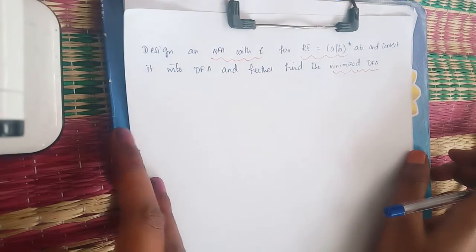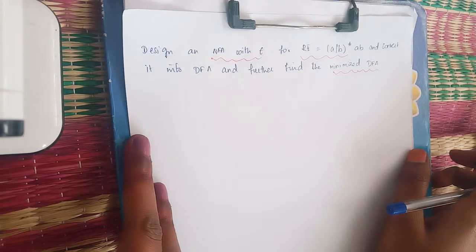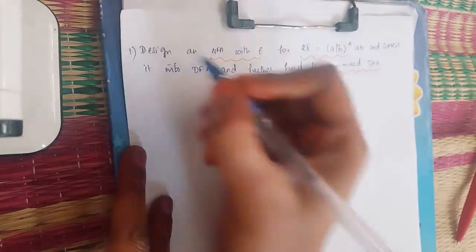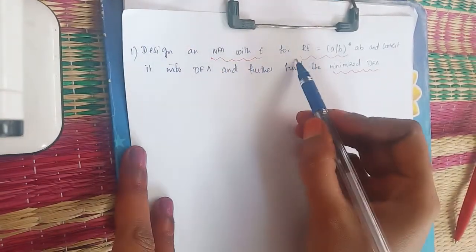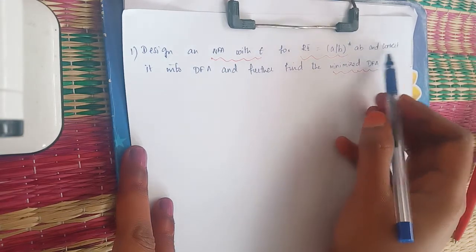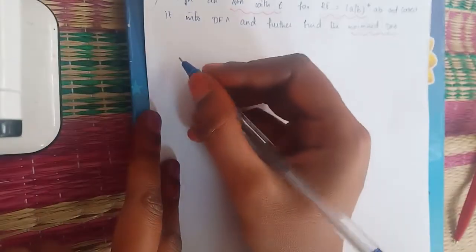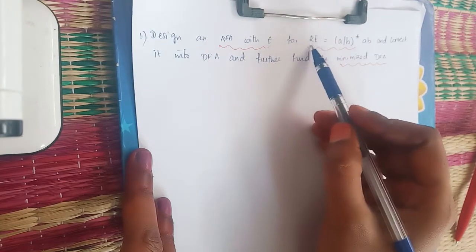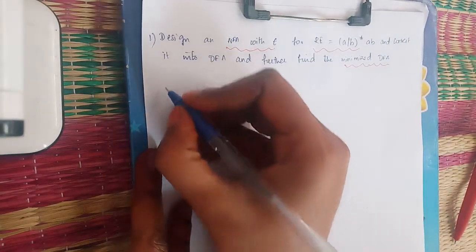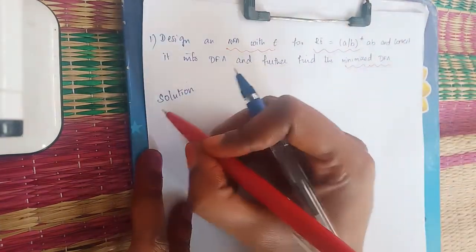Welcome to the theory of computation session. We will see a problem of converting a regular expression to a minimized DFA. The problem is: design an NFA with epsilon for the regular expression (A or B)*, convert it into a DFA, and further find the minimized DFA. We will use Thomson construction method to draw the NFA with epsilon.